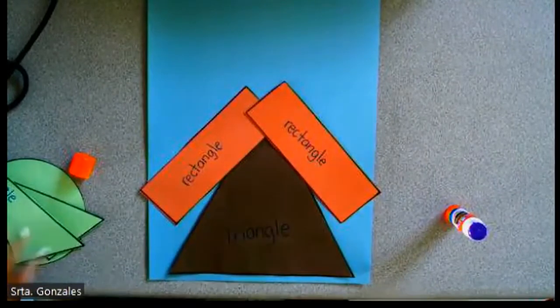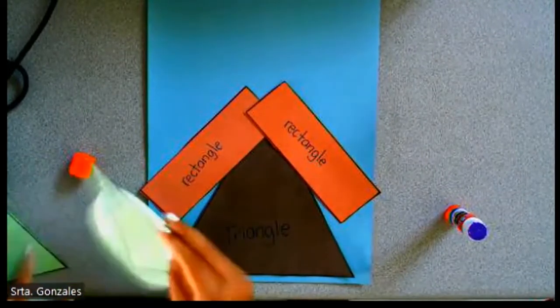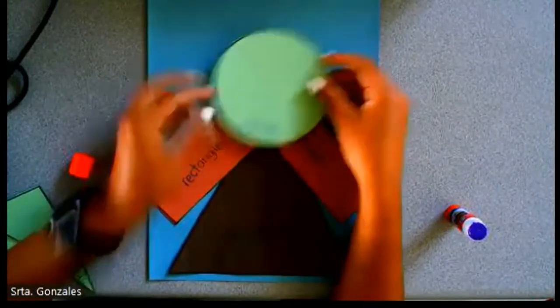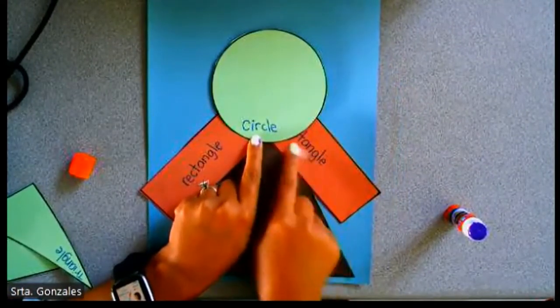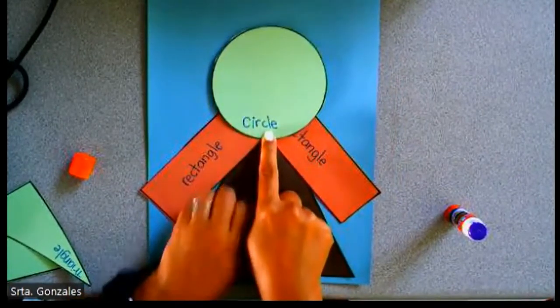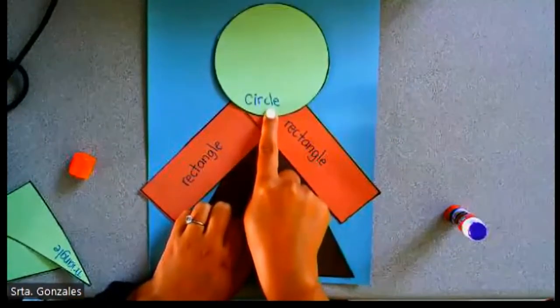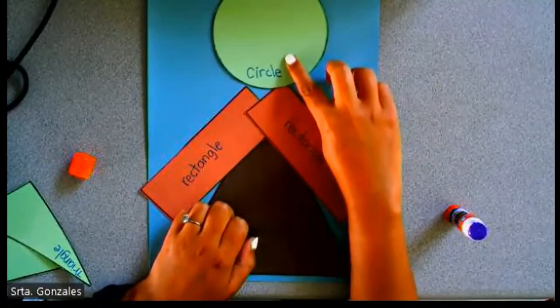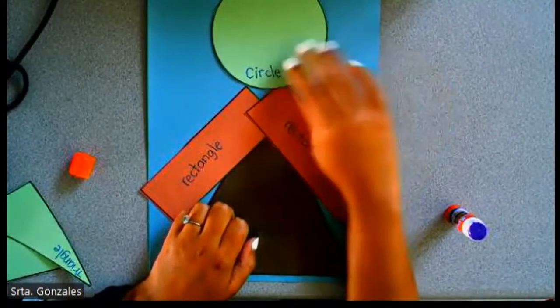Perfect. Now, grab your circle and make sure the word circle is facing down. Let's not cover the word rectangle. Let's go up just a little, perfect. We don't want that to show. We don't want glue to show.